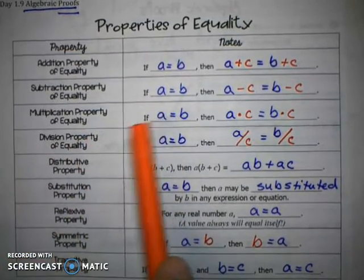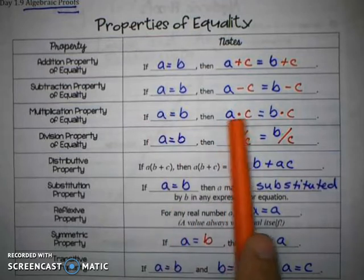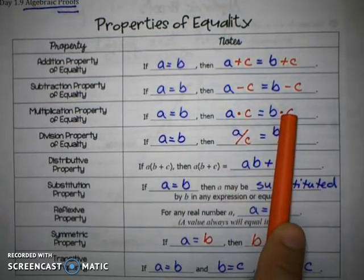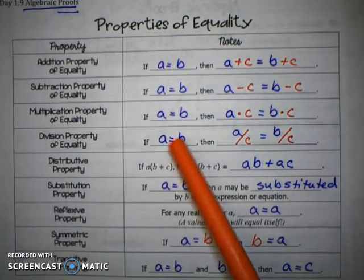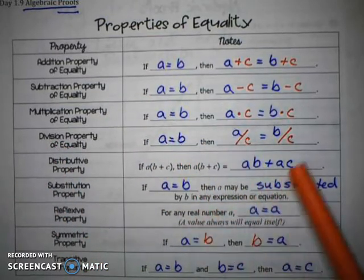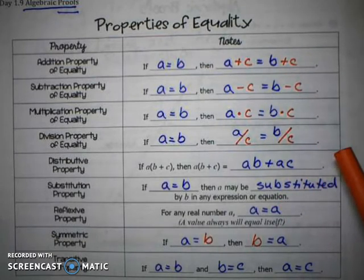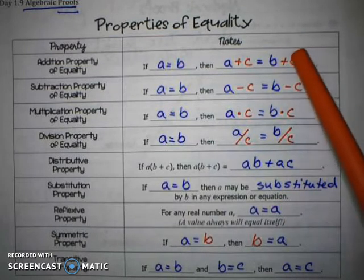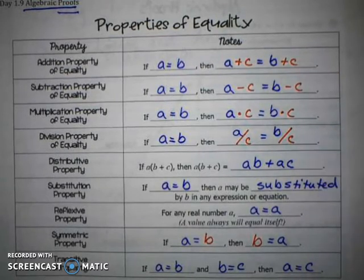Next we have our multiplication property of equality. And that would say if A equals B, then A times C equals B times C. And our division property of equality: If A equals B, then A divided by C equals B divided by C. Again, these first four here are just the ways that we work with the same operation on both sides of the equal sign to solve an equation. And so those are properties of equality.